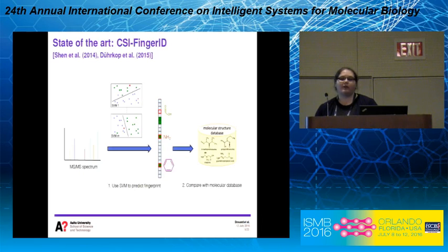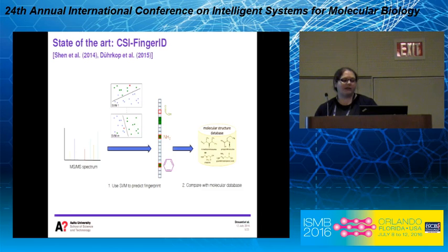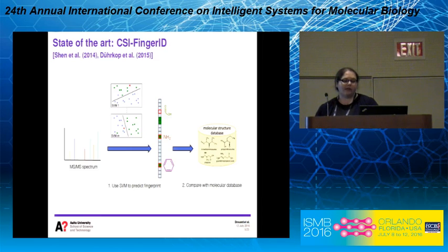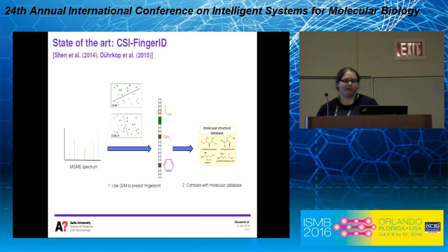The state-of-the-art machine learning method for solving metabolite identification is called CSI:FingerID. This method is a two-step approach. The first step uses an SVM classifier to predict a molecular fingerprint — one SVM is used to predict each molecular property. Given the predicted fingerprint, there is then a comparison with a molecular database where molecules are transformed into molecular fingerprints, and a scoring function computes the similarity between the predicted fingerprint and each molecule. The output is the molecule with the highest score.